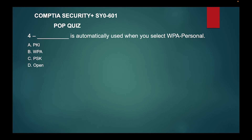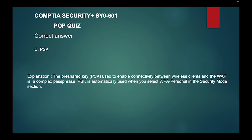Question four, fill in the blank: blank is automatically used when you select WPA Personal. Is it A, PKI; B, WPA; C, PSK; or D, Open? The correct answer is PSK — the pre-shared key. PSK is used to enable connectivity between a wireless client and the WAP and is a complex passphrase. PSK is automatically used when you select WPA or Personal in the Security Mode section.